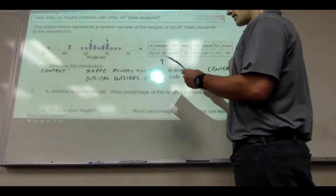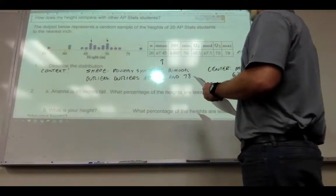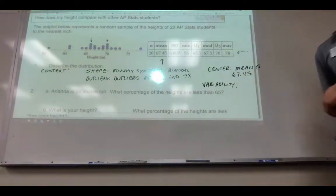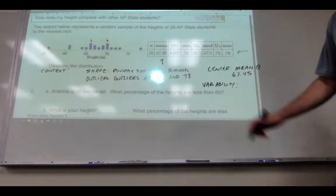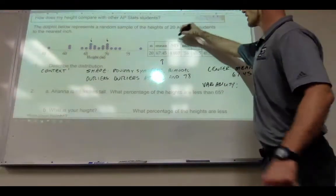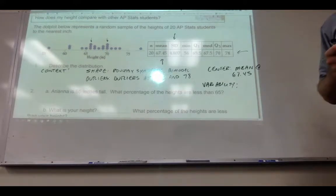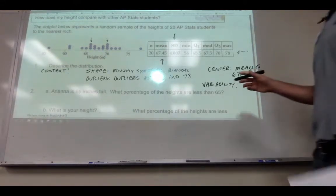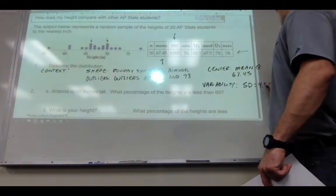And then how do you describe variability in this case? Standard deviation. Oh, are you serious? They give it to us. So we went through SOCV variability. So our standard deviation is 4.807.